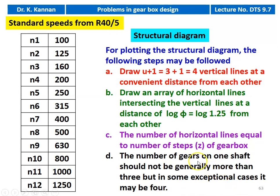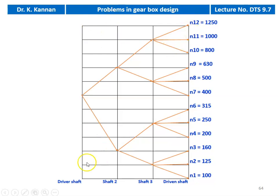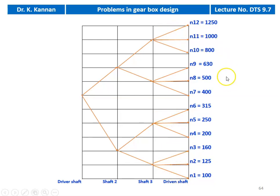The number of horizontal lines equals the number of steps — for a 12-speed gearbox, we have 12 horizontal lines. The structural diagram gives information about the number of gears on each shaft; the number of gears on one shaft should generally not be more than 3, but in some exceptional cases it may be 4. For the first stage, driver shaft to shaft 2, there are 2 output speeds. For the second stage, shaft 2 to shaft 3, for every input speed there are 2 output speeds. For the third stage, shaft 3 to driven shaft, for every input speed there are 3 output speeds, giving 12 output speeds at the driven shaft.